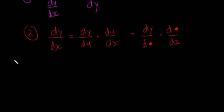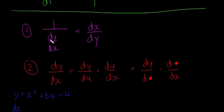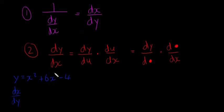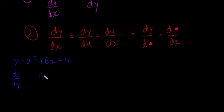Our example we're going to do here is y is equal to x² + 6x - 4, and they ask us for dx/dy. So dx/dy is kind of hard to calculate here, so what we're going to do is we're going to calculate dy/dx, and then we're going to use the first rule, and then we're going to be able to get dx/dy. So dy/dx is going to be equal to 2x + 6.